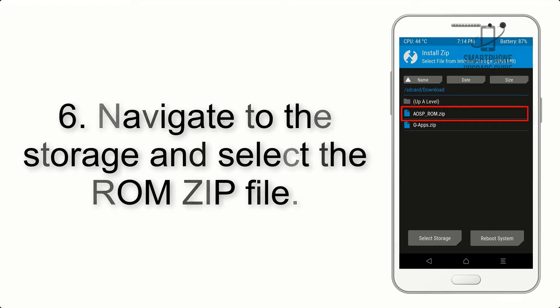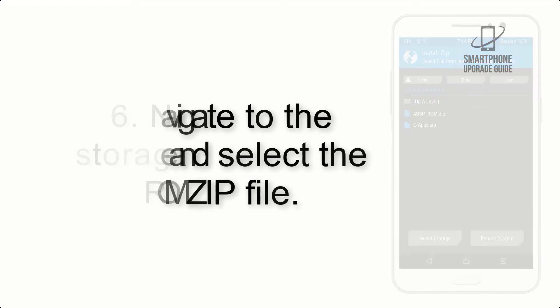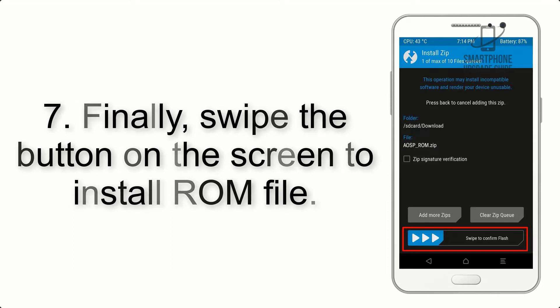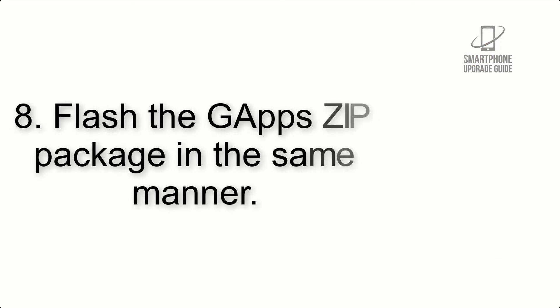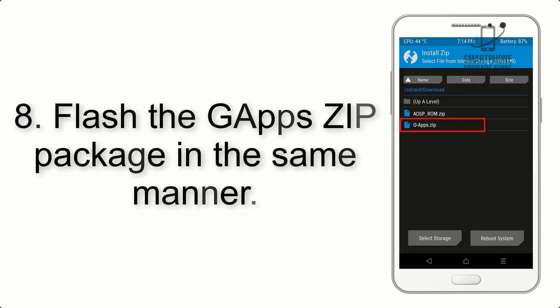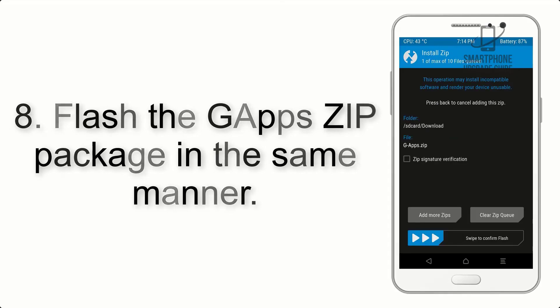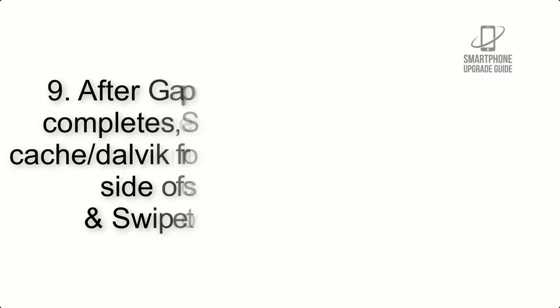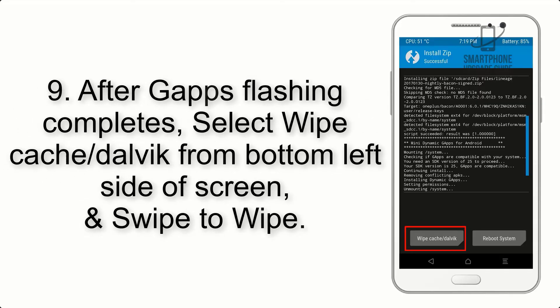Step 6: Navigate to the storage and select the ROM zip file. Step 7: Finally, swipe the button on the screen to install the ROM file. Step 8: Flash the GApps zip package in the same manner.